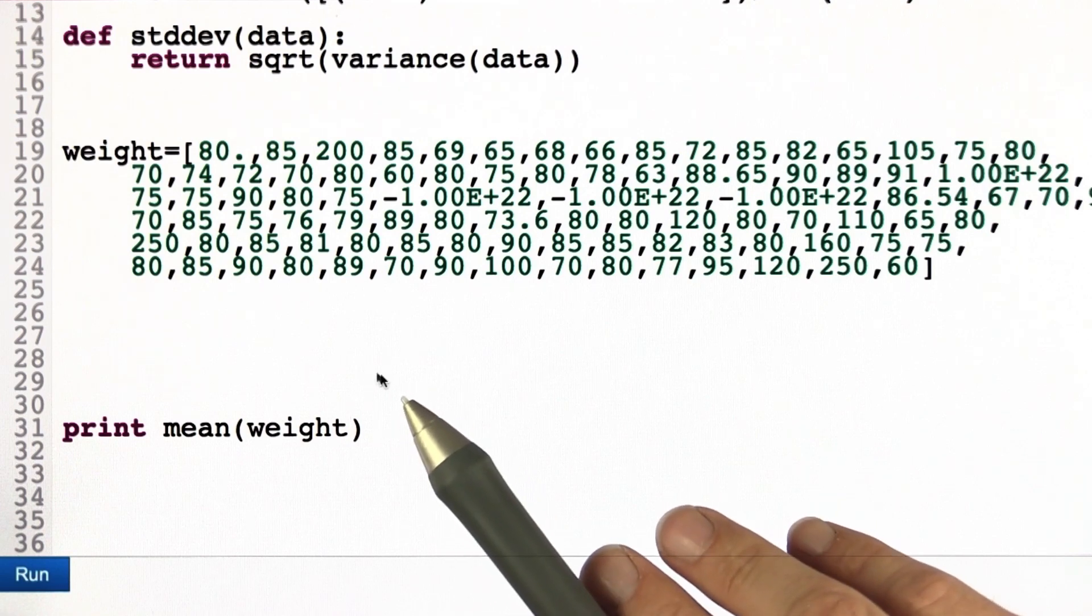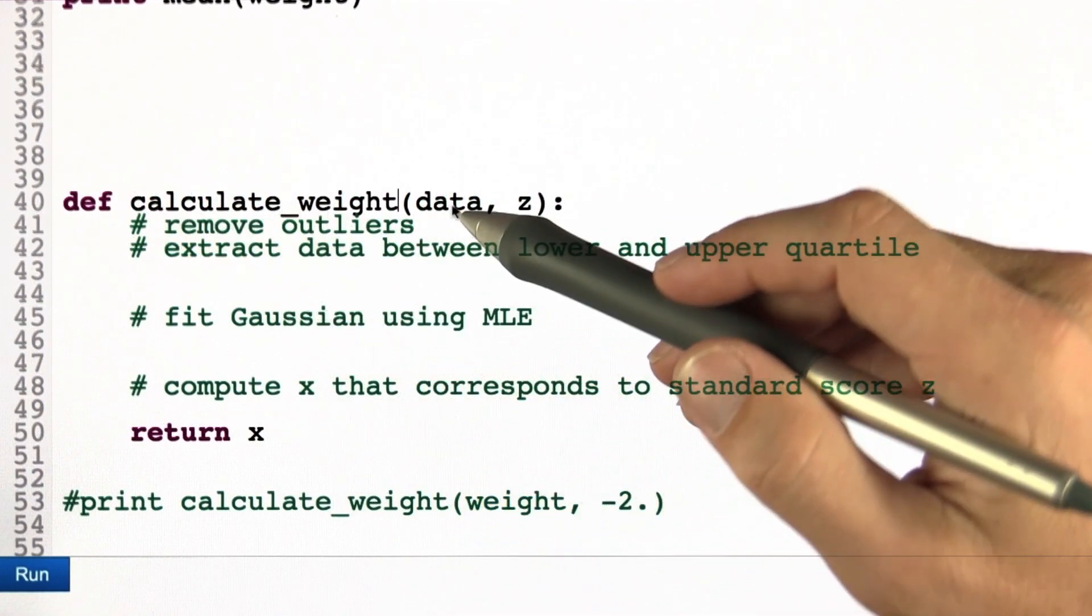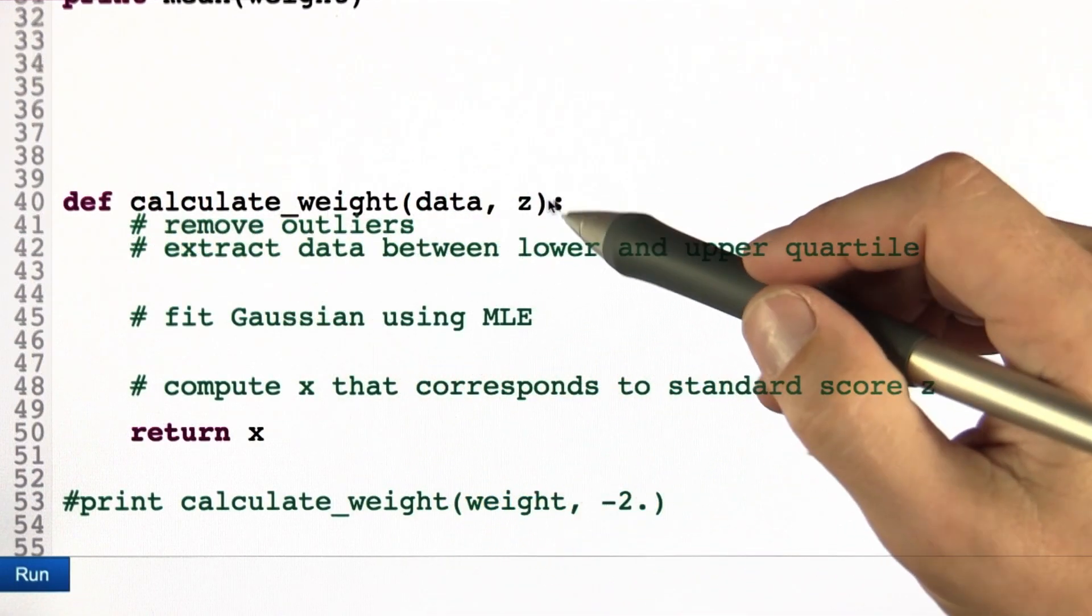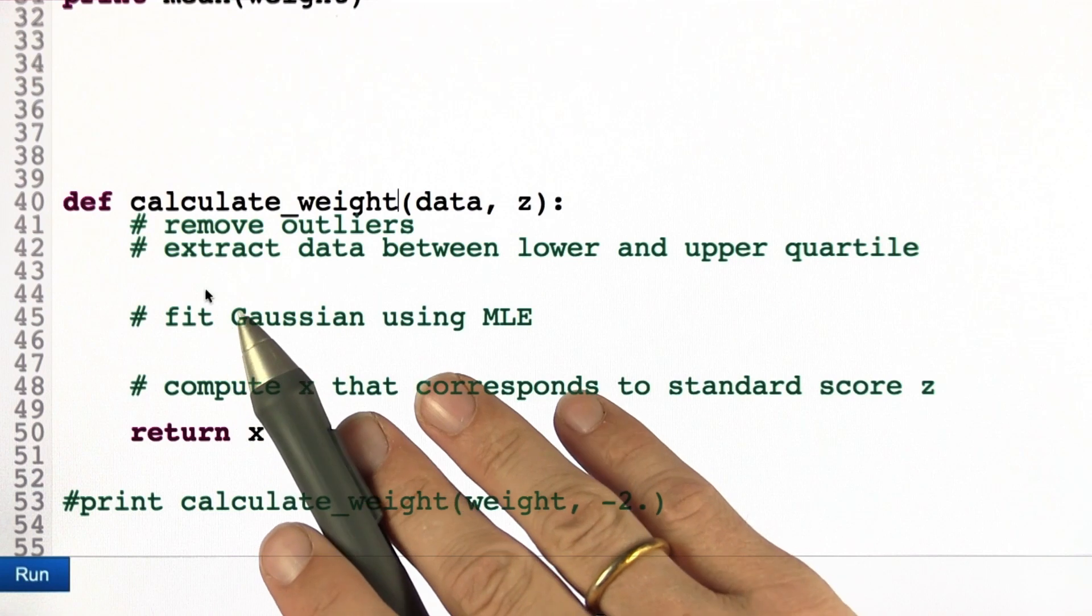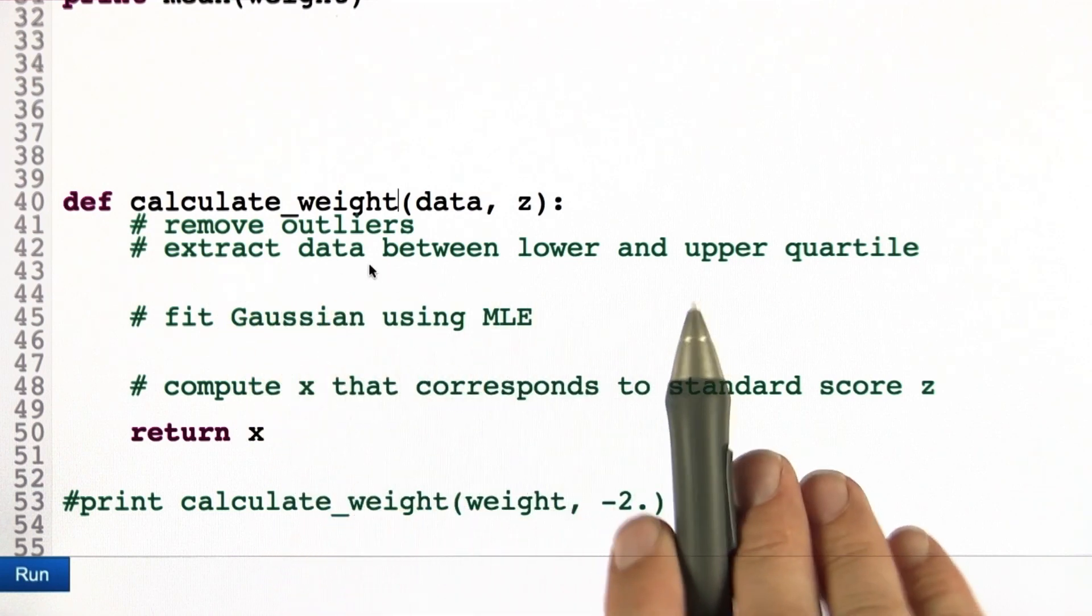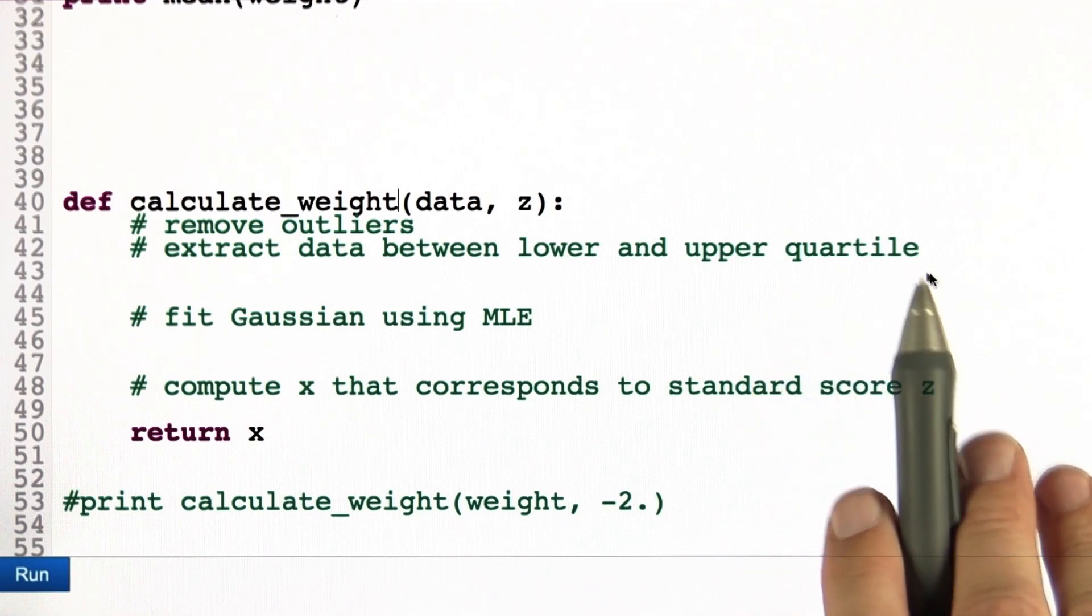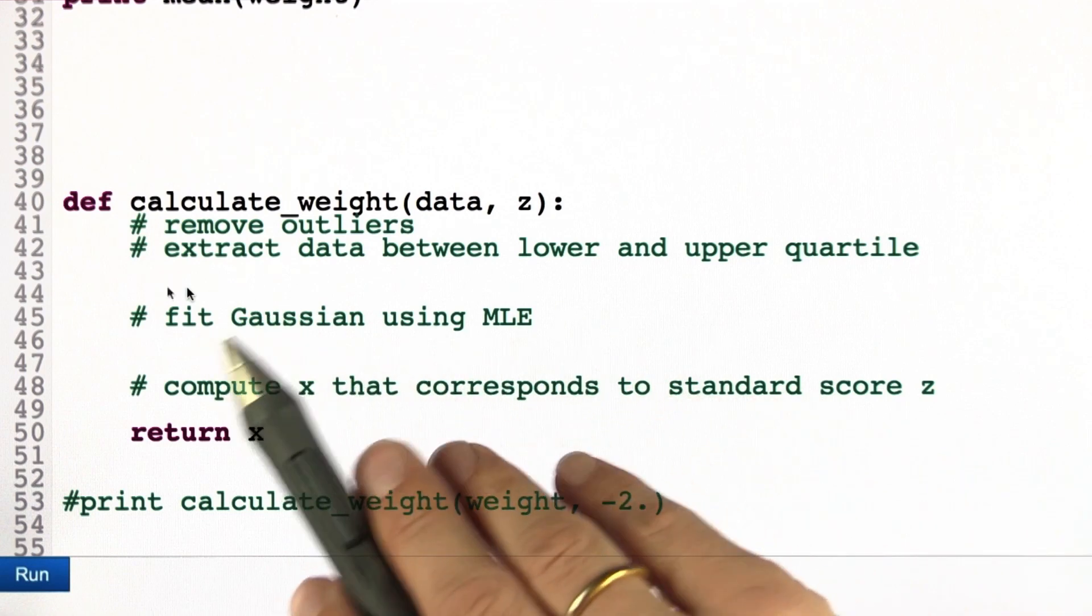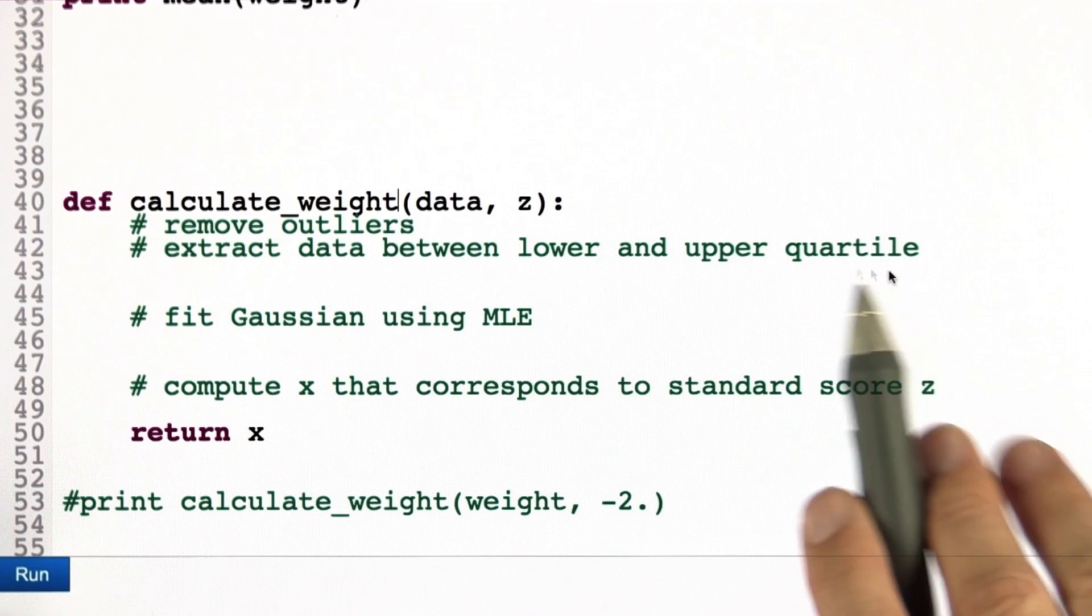Now, you've learned how to deal with this. And you know everything about statistics. What I want you to do is to now code a piece of software called calculate_weight that does three things. And I think you can do all three of them yourself. First, I want you to remove the outliers by only extracting data between the lower and upper quartile. So, it turns out the number of data points make it well-defined what the lower and upper quartile is. And all test cases we run through will have a well-defined number of data points. And all the test cases we will be using will have the property that the lower and upper quartile are well-defined elements.